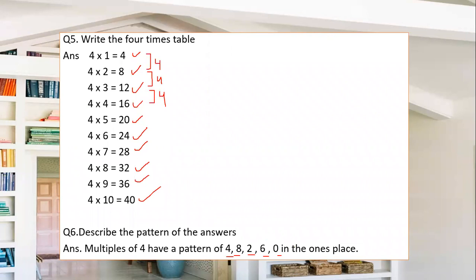For example: 40 is a multiple of 4 ending in 0, then 8 ending in 8, then 32 ending in 2, then 12 and 32 ending in 2, then 6 seen in 36 and 16, and 4 itself. So all numbers end in 0, 2, 4, 6, or 8.